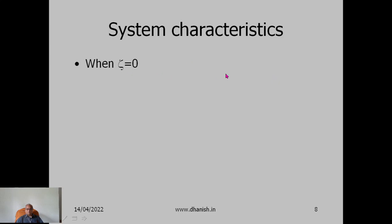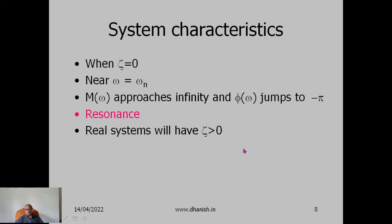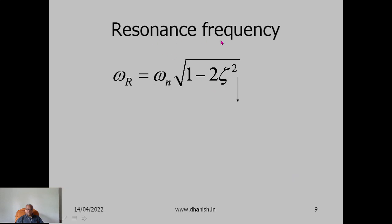When ζ = 0 (no damping) and the signal frequency is close to the natural frequency, the magnitude ratio approaches infinity and the phase lag jumps to −π from 0 — this phenomenon is called resonance. Real systems will never have ζ = 0; it will be greater than 0, so the magnitude of resonance is reduced, but there may still be resonance with a lower amplitude. The frequency of resonance is called the resonance frequency: ωr = ωn · √(1 − 2ζ²), where ζ is the damping ratio.